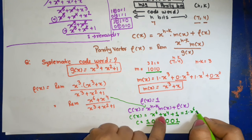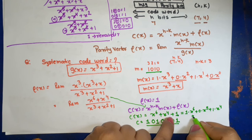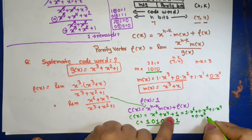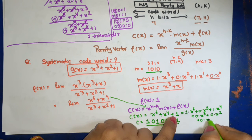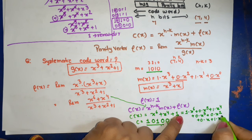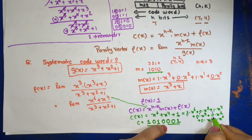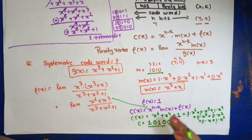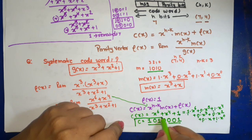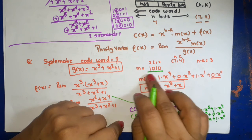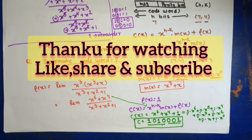You can see that the first four bits — 1 0 1 0 — are exactly our message bits, and the last three bits — 0 0 1 — are the parity check bits. You can either read the binary directly from the polynomial, or expand the expression term by term. This is the systematic cyclic code for message 1 0 1 0. If you have any doubt related to this, please write down in the comment section. Thank you.